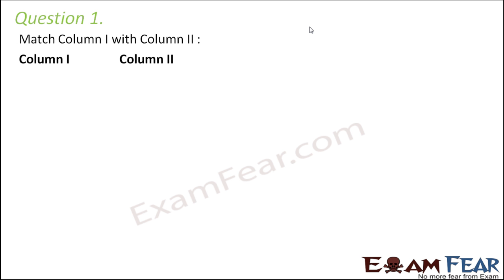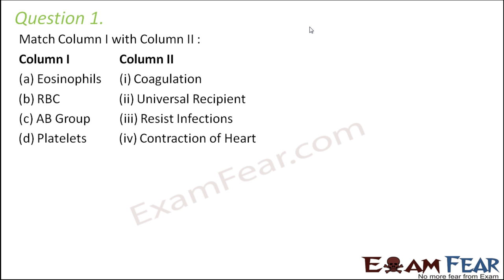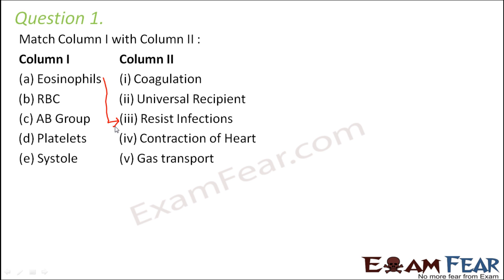Question number one: match column one with column two. Eosinophils — this is a type of white blood cell. What do they do? They resist infections. RBC, that is red blood cells — their primary function is transport. They keep moving in the blood from one place to another, helping in gas transport as well as transporting many other substances.